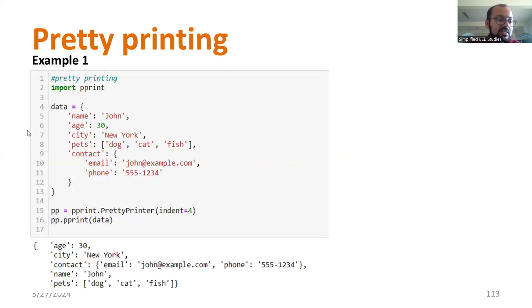For example, we have certain data. You can see line number four, we have data including name John, age 30, city New York, pets dog, cat, fish, contact, and so many other fields. First and foremost, we have to import the module called pprint. Then the given data should be represented in better visual visibility form. We have to enter the data, import the pprint module, then we require a command called pprint.PrettyPrinter with indent 4, and pprint data. The data will be printed in a visually represented form.